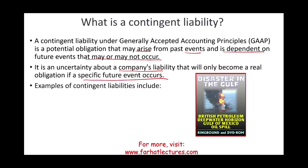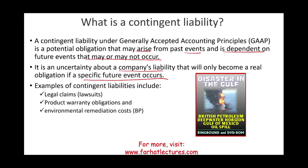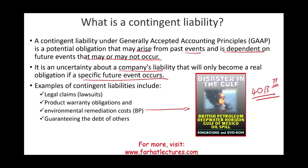What are some typical examples of contingent liabilities? The most typical one is a lawsuit or legal claim — someone sues you and you're waiting to see whether you're going to win or lose. A product warranty and environmental remediation costs, such as the British Petroleum spill in the Gulf of Mexico that cost British Petroleum 40 billion dollars — they knew they'd have a liability, but did they know the amount? Also, guaranteeing the debt of others could be a potential liability. If you guarantee the debt of another company and that company cannot pay, do you have a contingent liability?